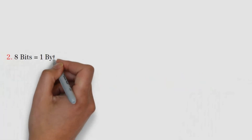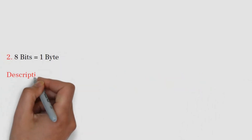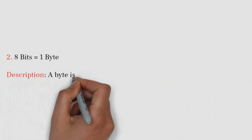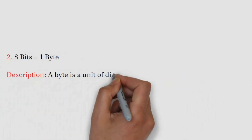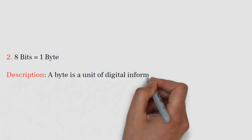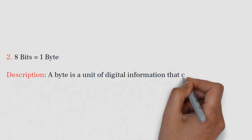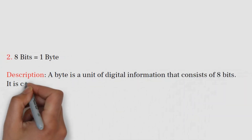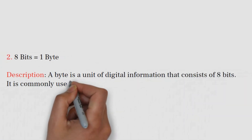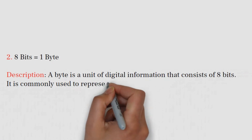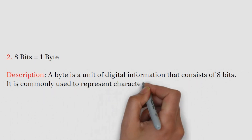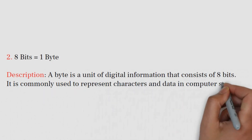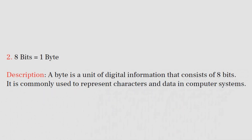Number 2: 8 bits equals 1 byte. A byte is a unit of digital information that consists of 8 bits. It is commonly used to represent characters and data in computer systems.